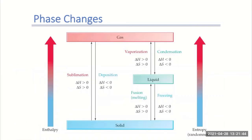Changing between the phases, we have different phase changes to look at. We can go from a solid to a liquid — that would be melting or fusion. And then from a liquid to a gas — that would be vaporization. Or we can do the opposite: going from a gas to a liquid would be condensation, or from a liquid to a solid would be freezing.